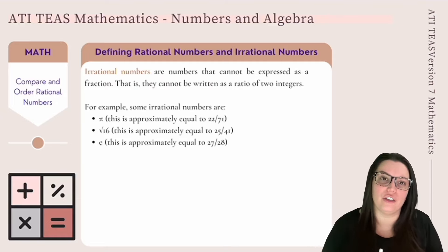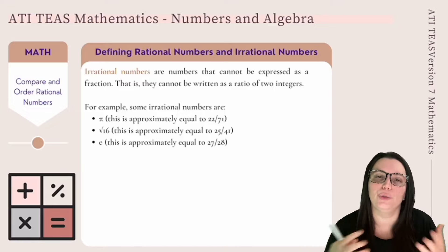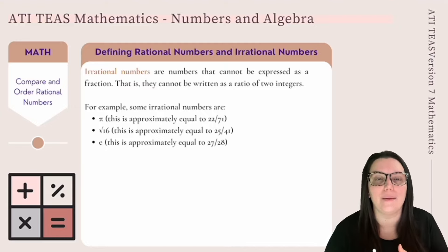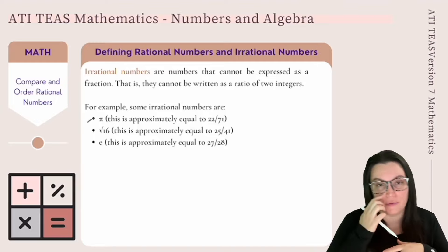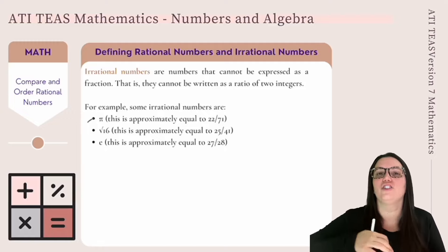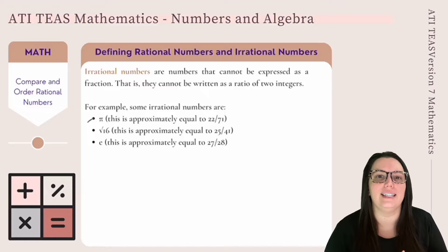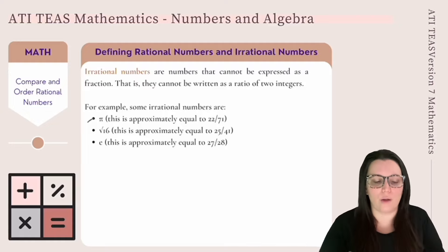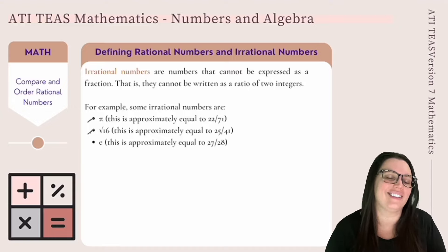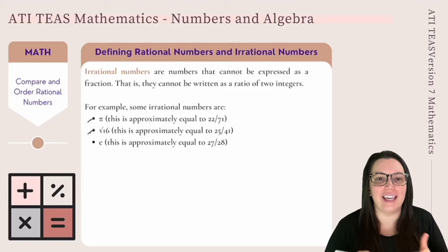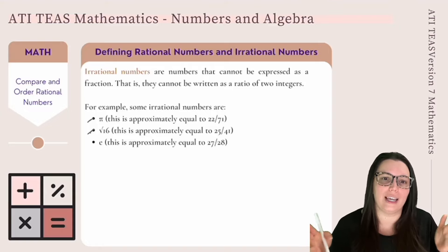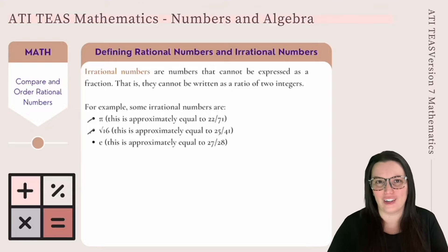Irrational numbers can't truly be expressed as fractions — they cannot be written as a ratio of two integers. For example, pi: while it can be approximated as a fraction, it's not completely equal to any fraction because pi is such a long number. Similarly, the square root of 2 has no exact fractional form — it can only be approximated (e.g., 25/41). The mathematical constant e is approximately 27/28 on calculators, but is not exactly equal to that fraction.